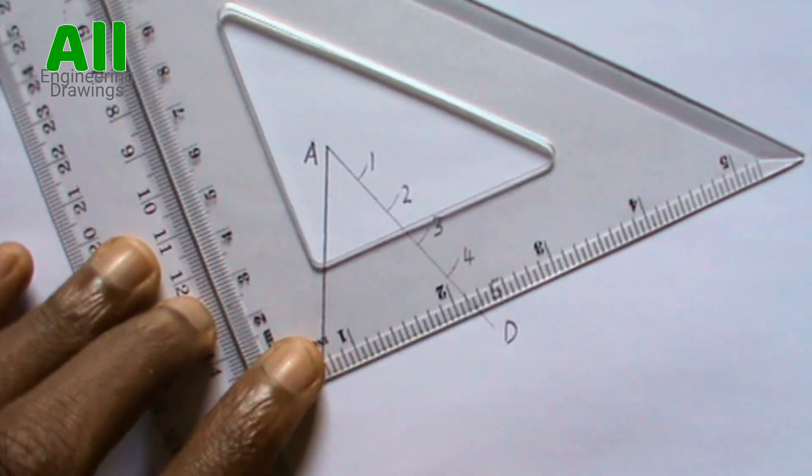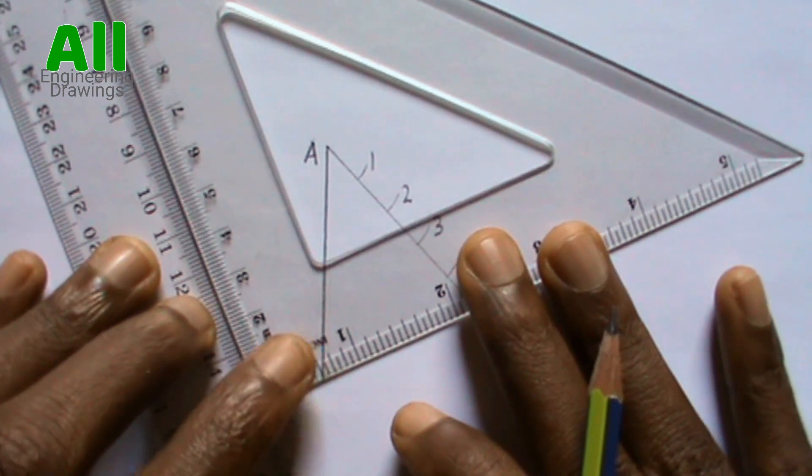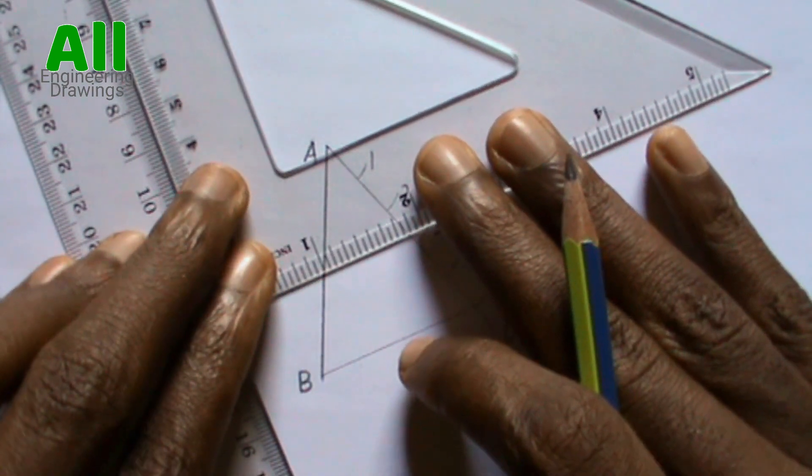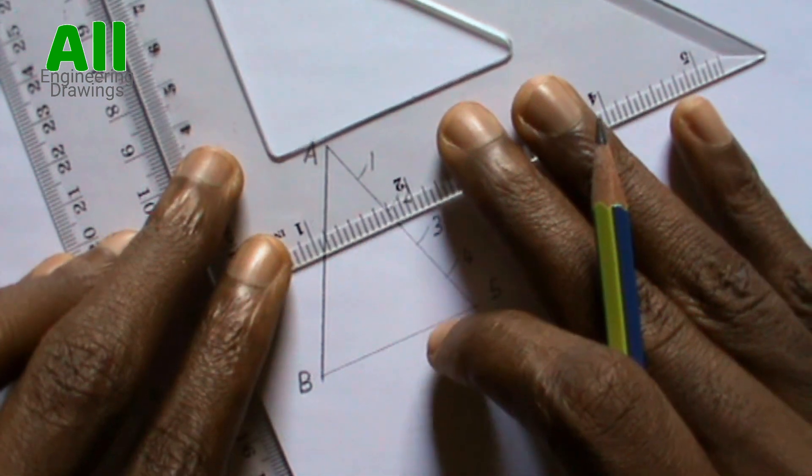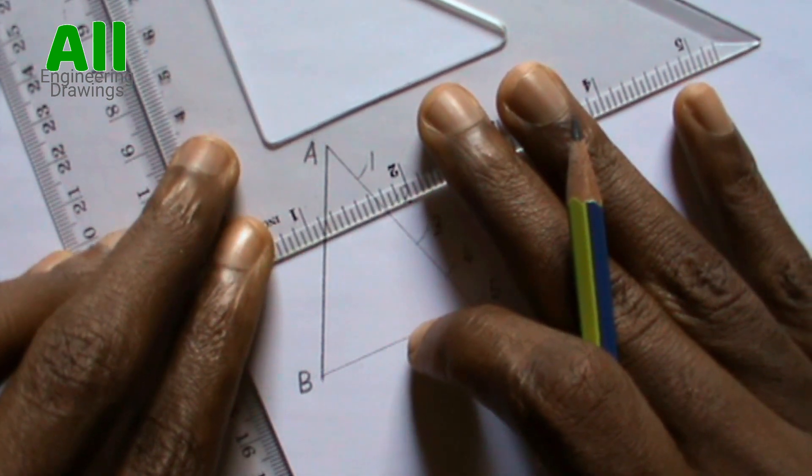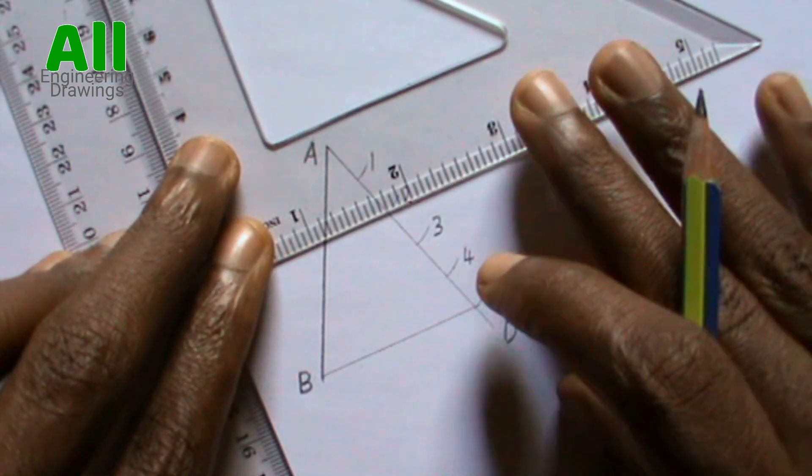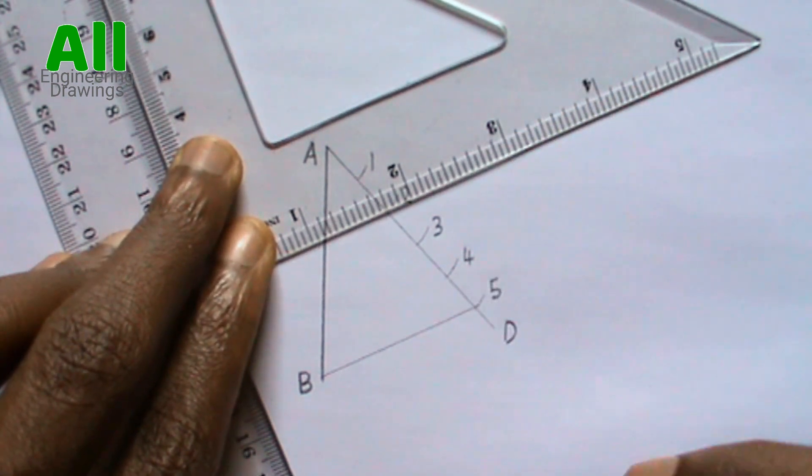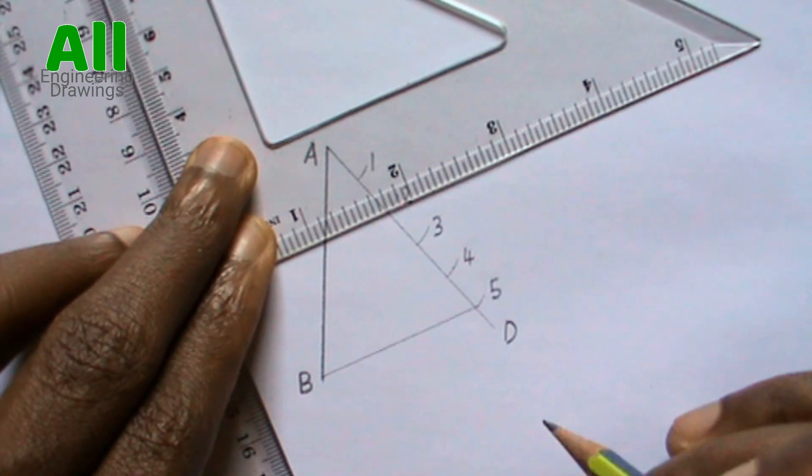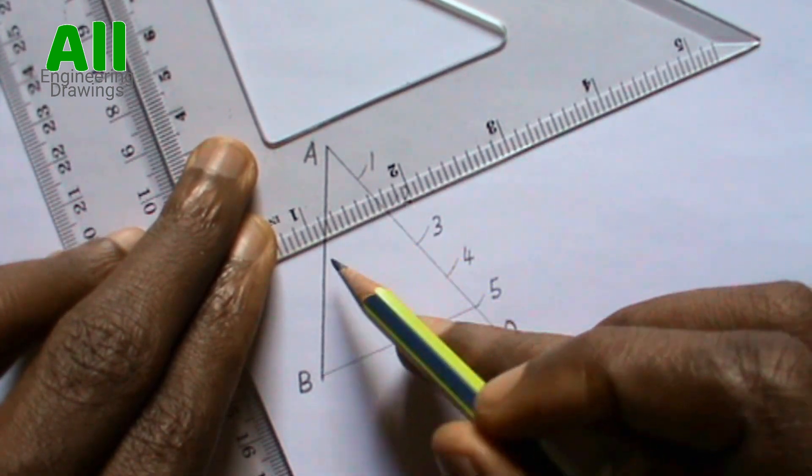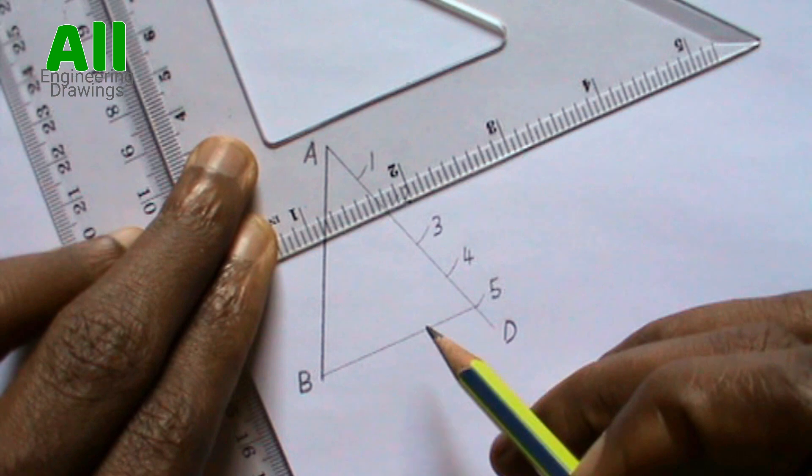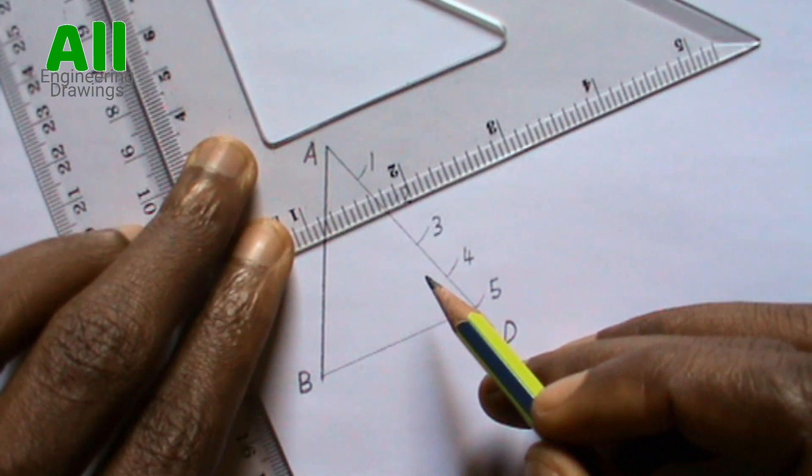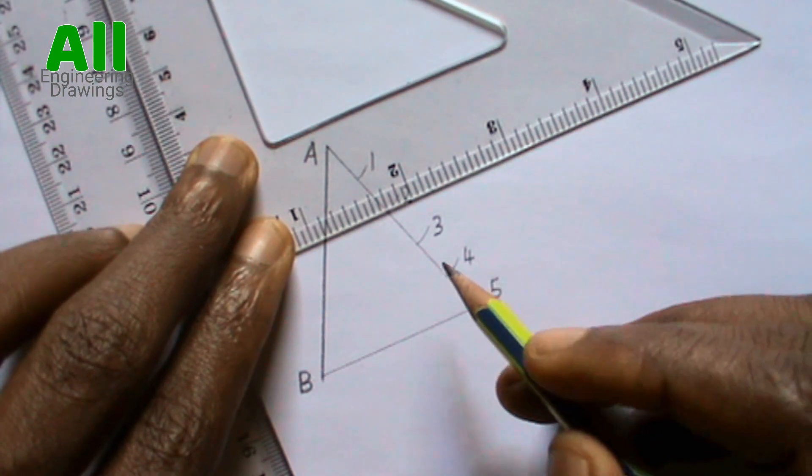Then without moving your ruler, slide your set square through your ruler. Now I will draw a line from point 2 to my line. I am drawing a line from point 2 because I am dividing my line in a ratio of 2:3.